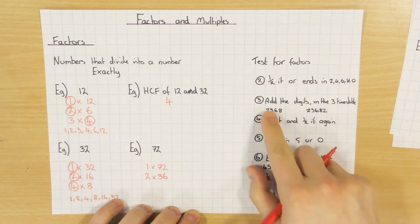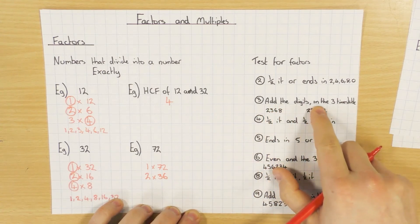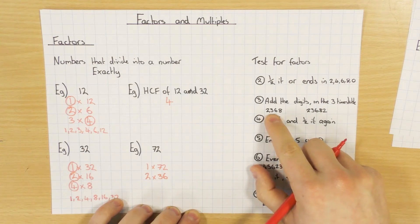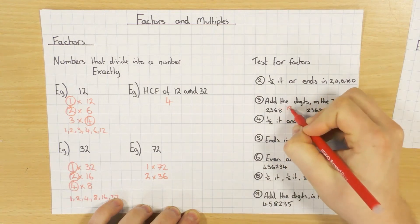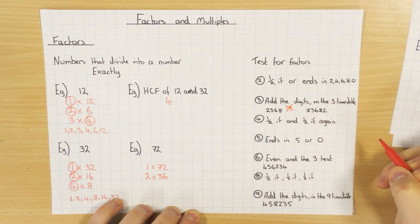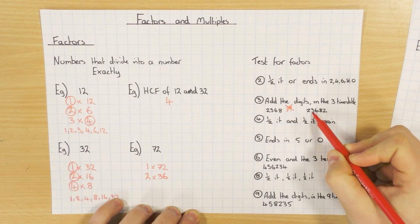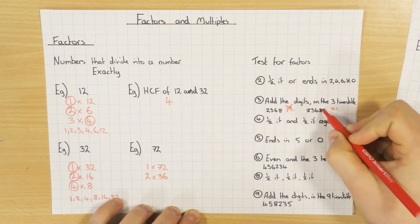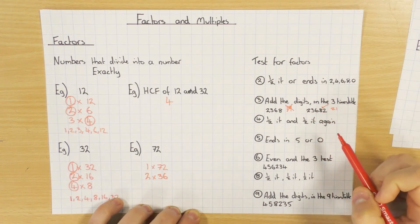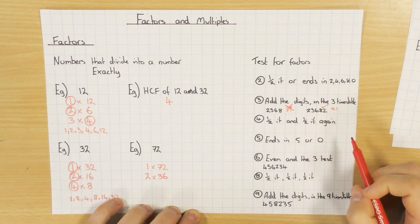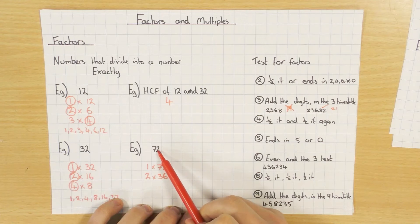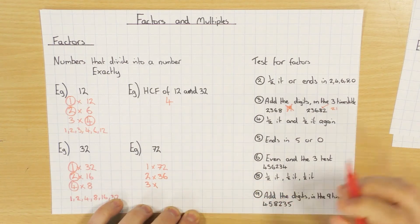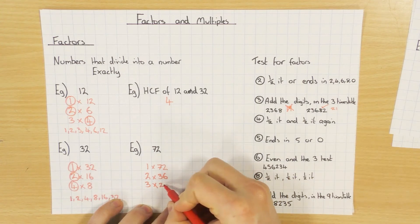Next number to test is 3. The little check you can do: add the digits, and if that sum is in the 3 times table, then yes 3 is a factor. For example, if the digits add up to 19, that's not in the 3 times table so 3 is not a factor. But if they add up to 21, that is in the 3 times table so 3 would be a factor. Applying that to 72: 7 add 2 is 9, and 9 is in the 3 times table, so 3 will definitely be a factor. So 3 times 24.